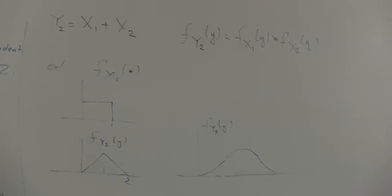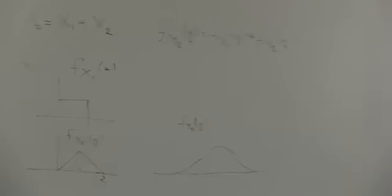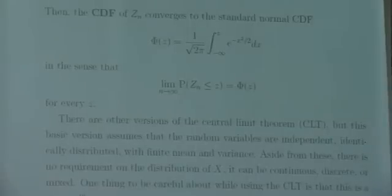However, the central limit theorem result is valid even when the random variables we're adding are discrete. That's interesting. Because we're talking about the CDF in this result. We're not talking about the PDF or PMF. And any random variable, whether it's continuous or discrete or neither, will have a CDF. And the CDF will always be what?